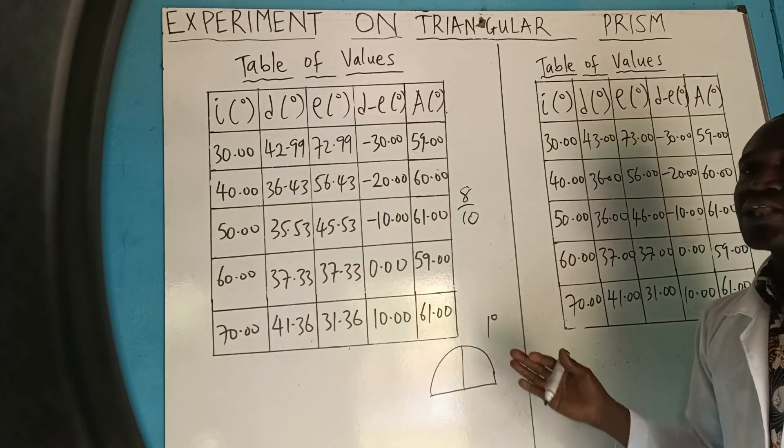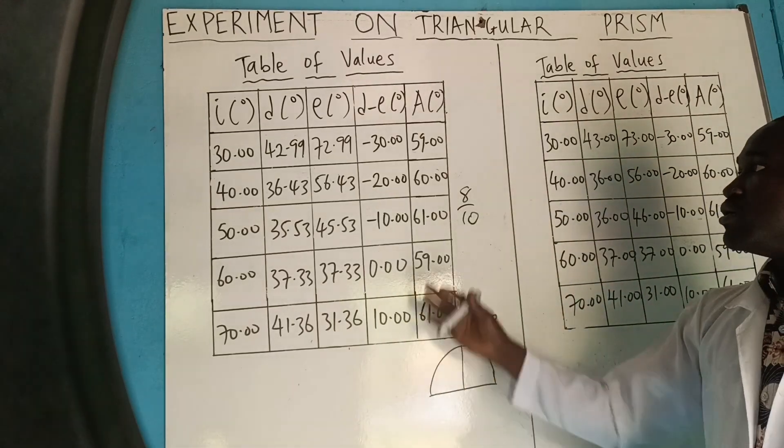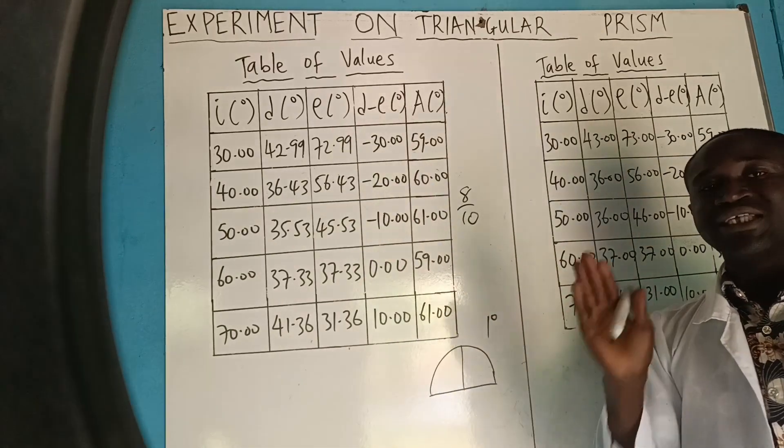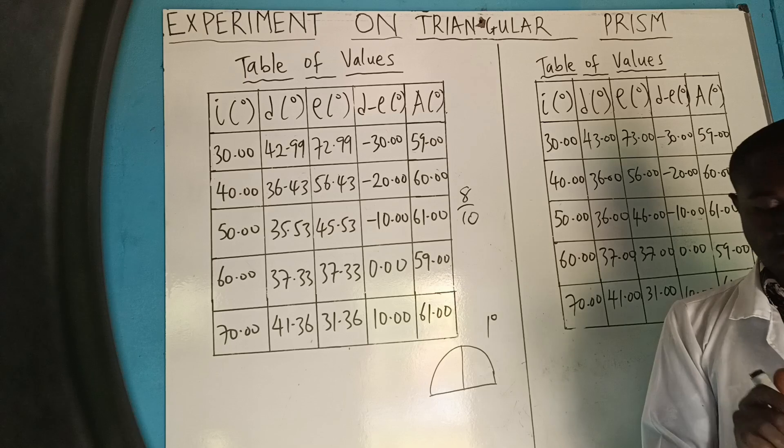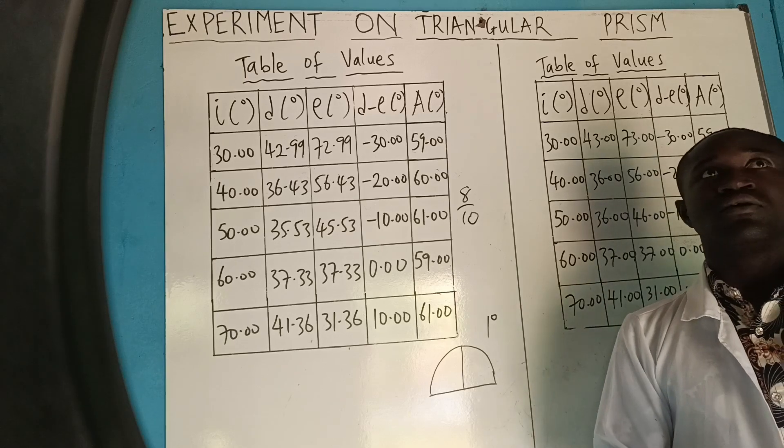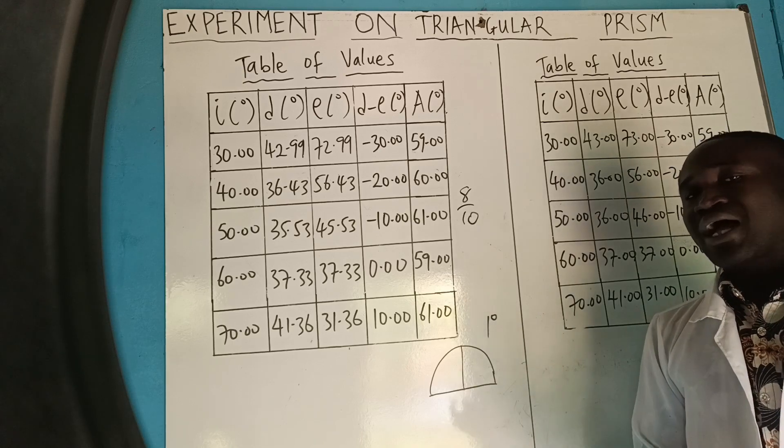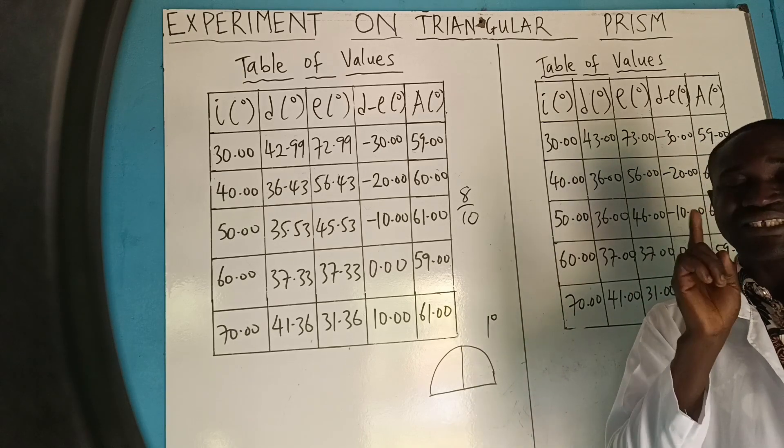So, that means if you are using your Protractor to do your measurement, please ensure that values you are putting on your table is in nearest degrees. But, if you are using a centimeter rule to do your measurement, you can have it in one decimal place.